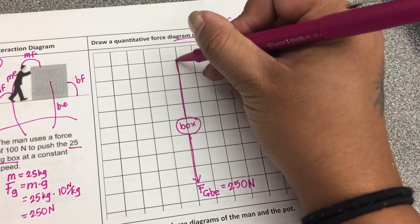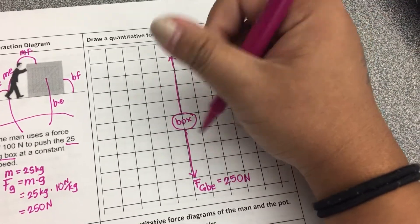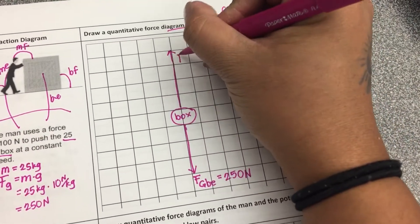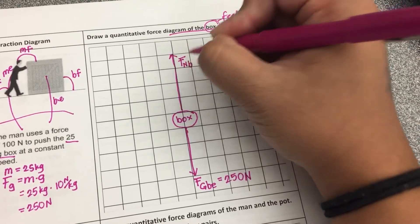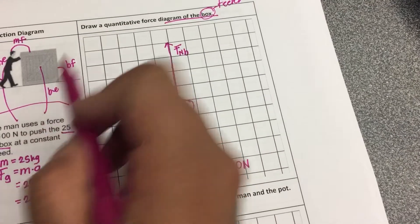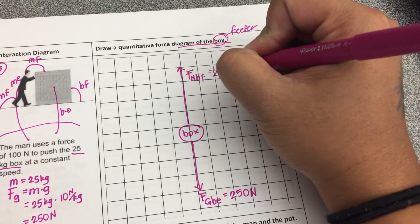Next, the box is being pushed up at the same force, but it's being pushed up. So it's a normal force on the box by the floor at 250 newtons.